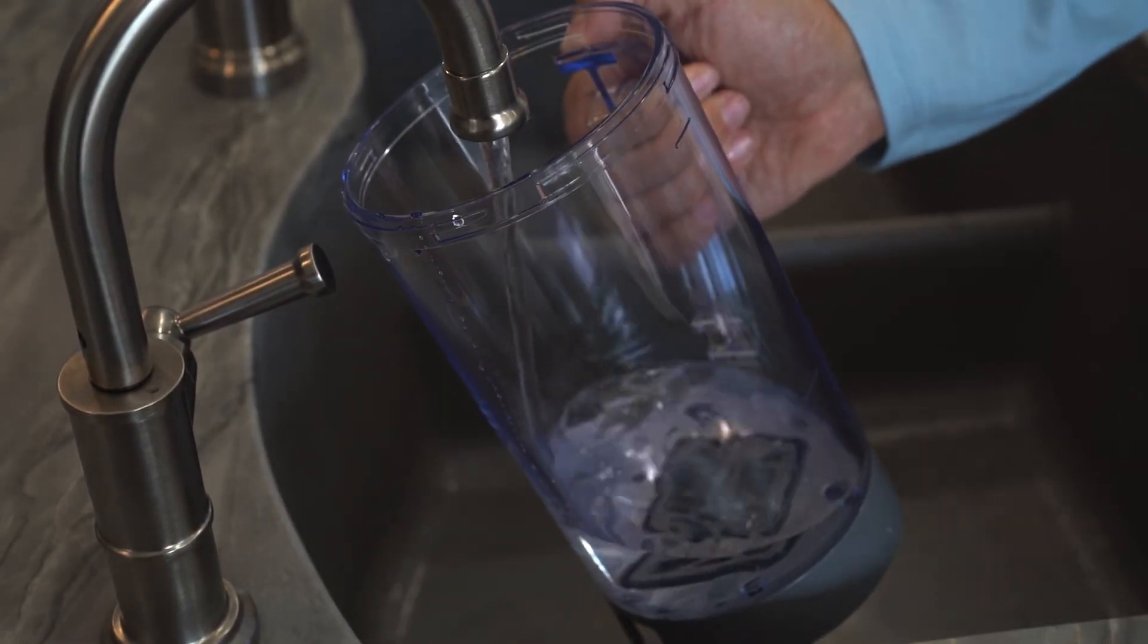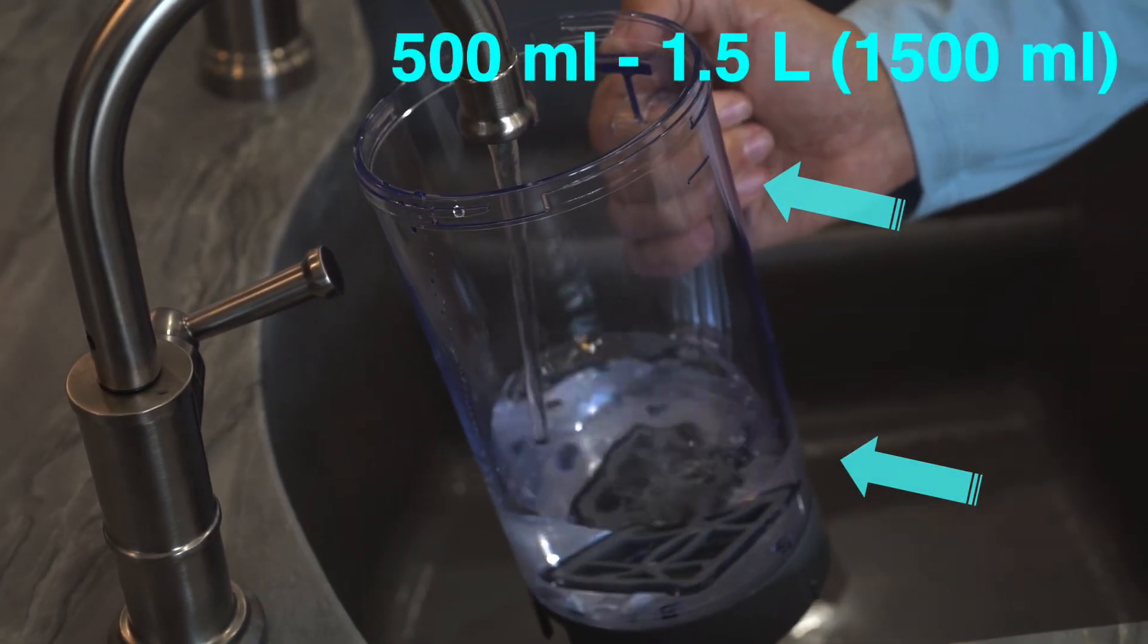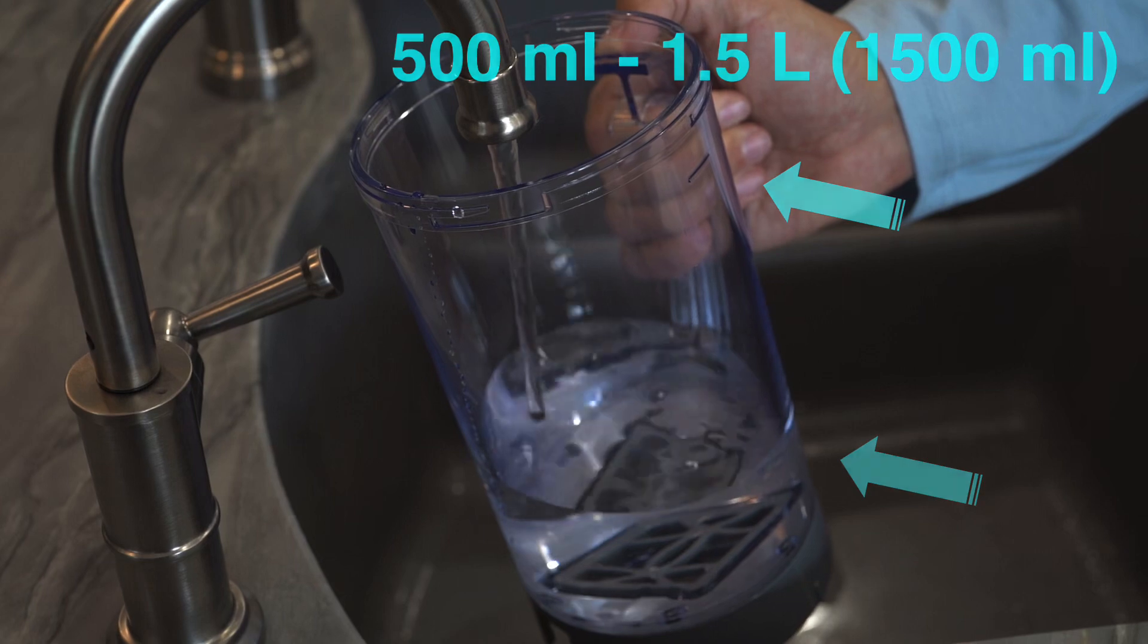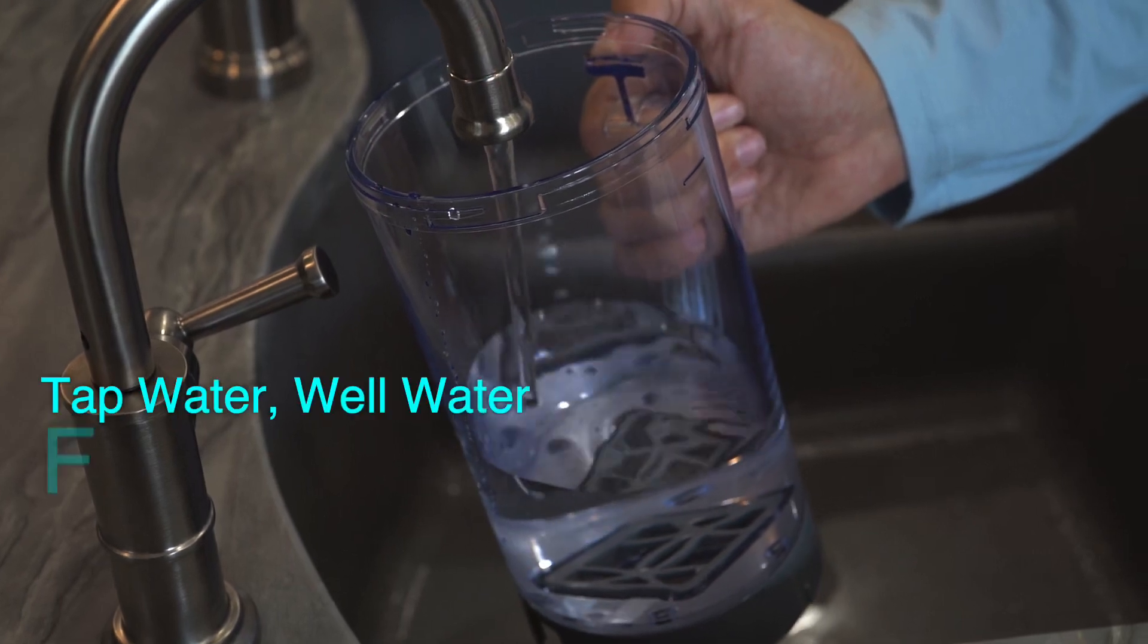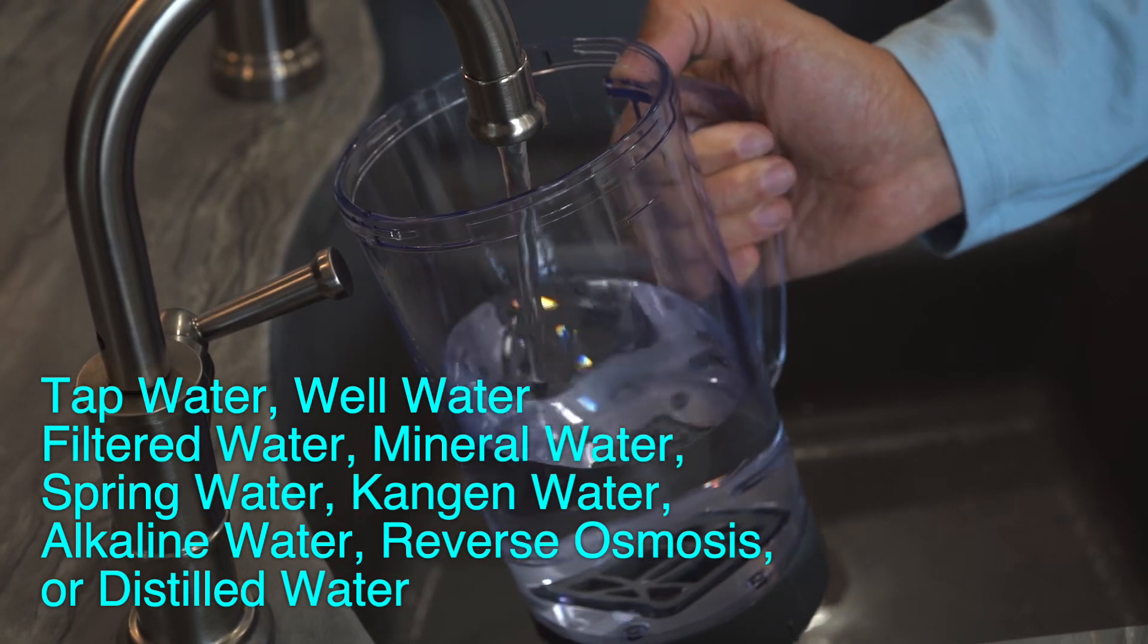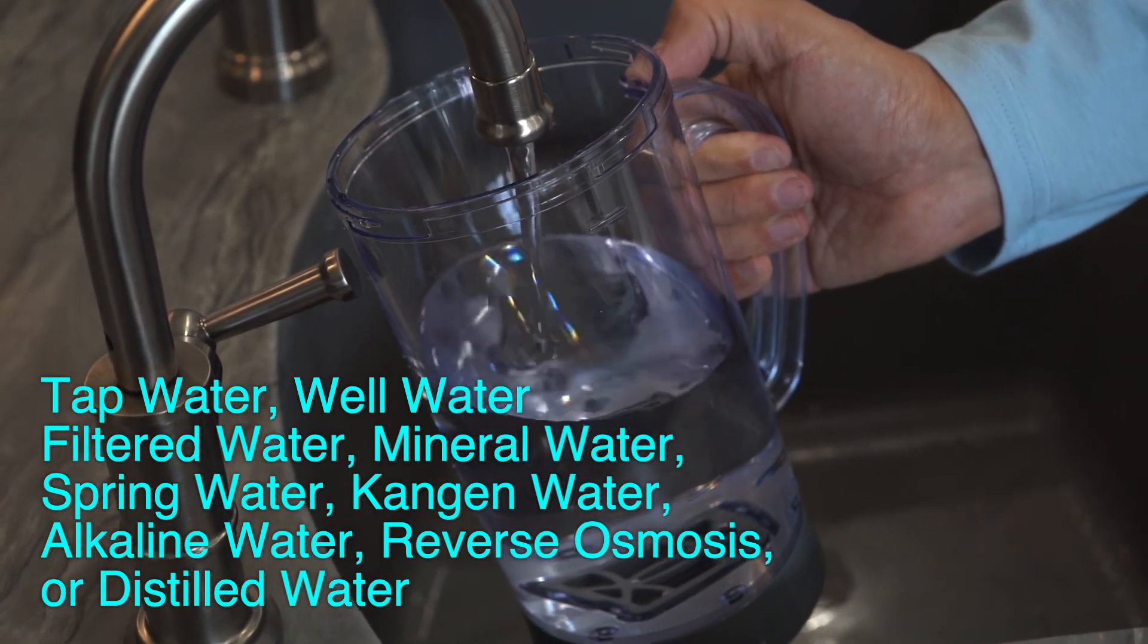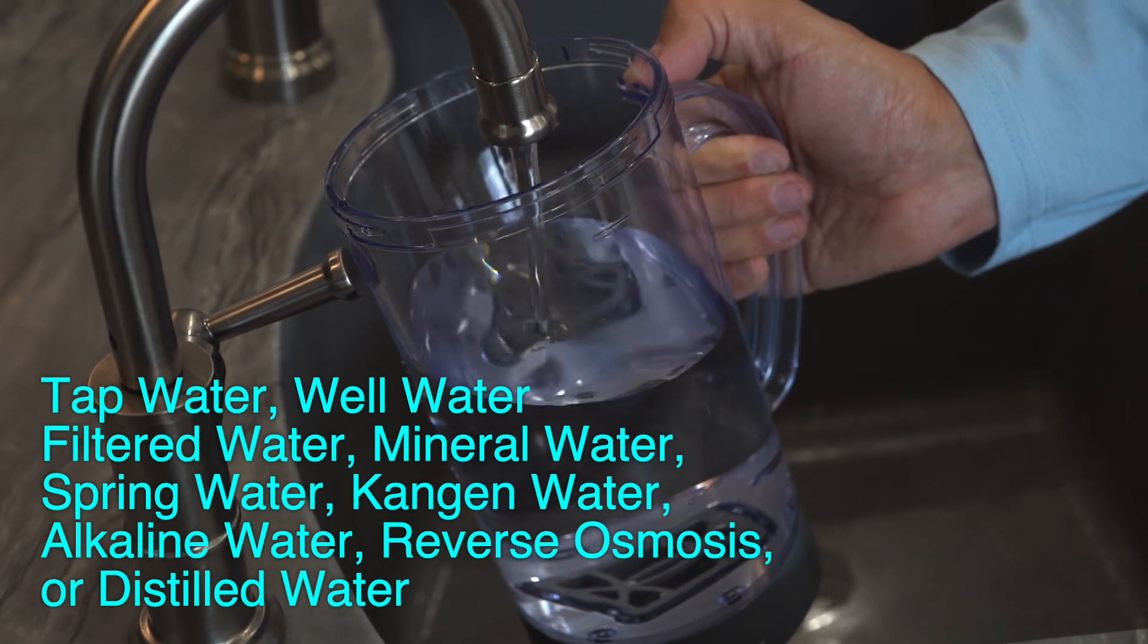Next, fill the pitcher with drinking water to either of the fill lines. Add between 500 milliliters or the recommended 1.5 liters of drinking water to the pitcher. Drinking water can be tap water, well water, filtered water, mineral water, spring water, Kangen water, alkaline water, reverse osmosis or distilled water.